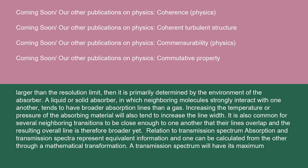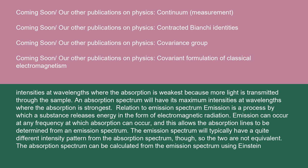Absorption and transmission spectra represent equivalent information and one can be calculated from the other through a mathematical transformation. A transmission spectrum will have its maximum intensities at wavelengths where the absorption is weakest because more light is transmitted through the sample. An absorption spectrum will have its maximum intensities at wavelengths where the absorption is strongest. Emission is a process by which a substance releases energy in the form of electromagnetic radiation. Emission can occur at any frequency at which absorption can occur, and this allows the absorption lines to be determined from an emission spectrum. The emission spectrum will typically have a quite different intensity pattern from the absorption spectrum, so the two are not equivalent.